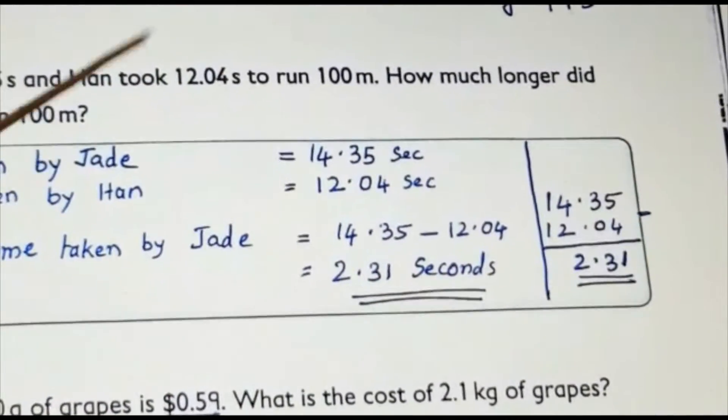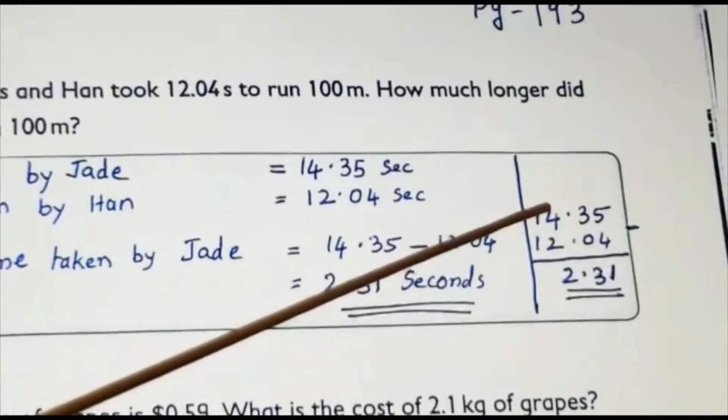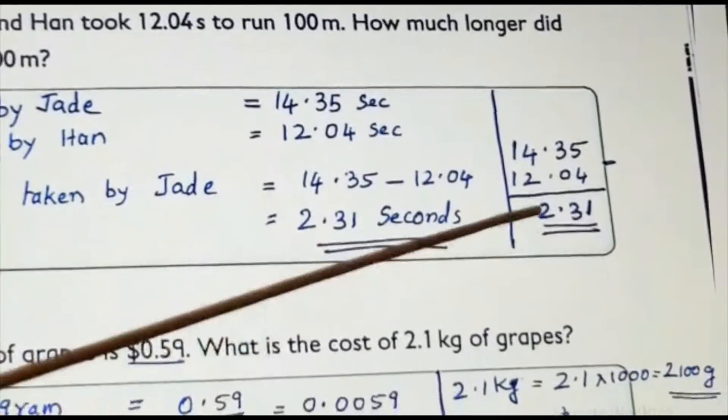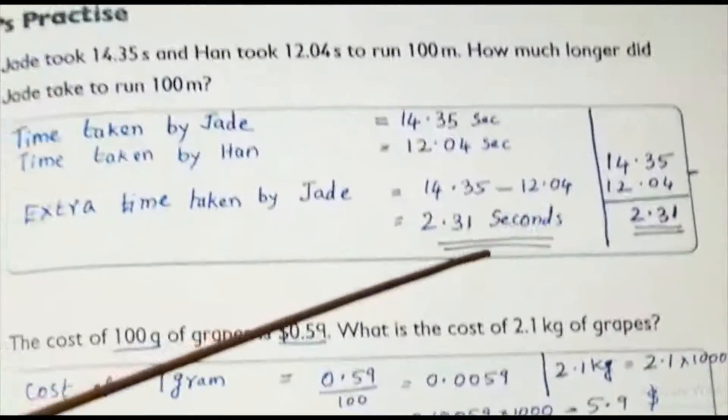You will be getting marks for the steps as well as the alignments. 5 minus 4, 1. 3 minus 0, 3. 4 minus 2, 2. 1 minus 1, 0. How much is that? 2.31 seconds.